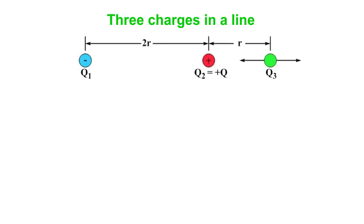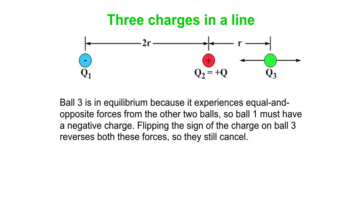Here we draw the free body diagram of charge number three. It's got two forces—one to the left, one to the right. One is coming from Q2, the other from Q1. Ball three is in equilibrium because it experiences equal and opposite forces.